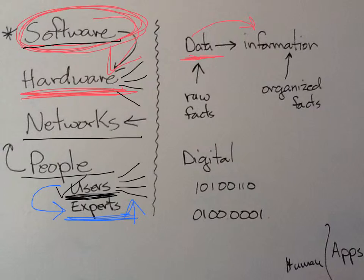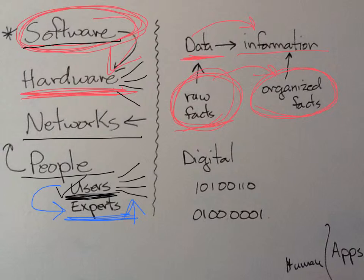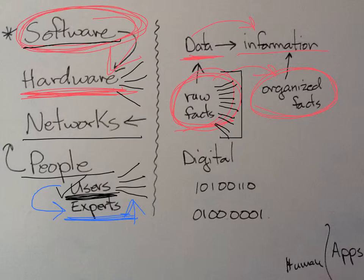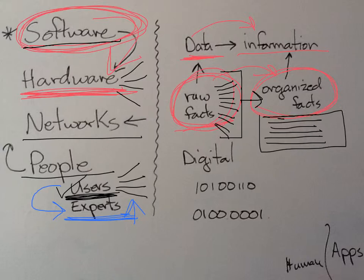Data is converted into information. New words: raw facts become organized facts. This is the raw data, and then we organize it into something meaningful. For example, here at the college, there's all kinds of raw data stored about students. What the computer system does is take that and process it into something meaningful — it gives me a class list for a certain class. So we took raw facts and organized them into something that has meaning: organized facts, which is now information.